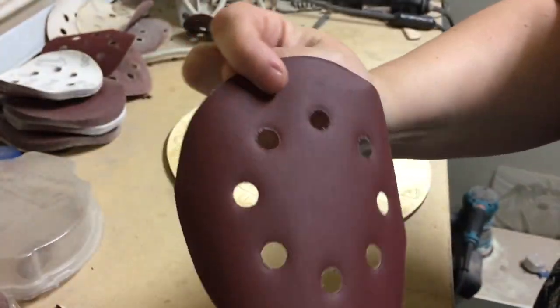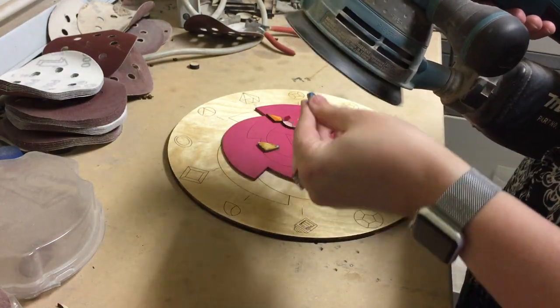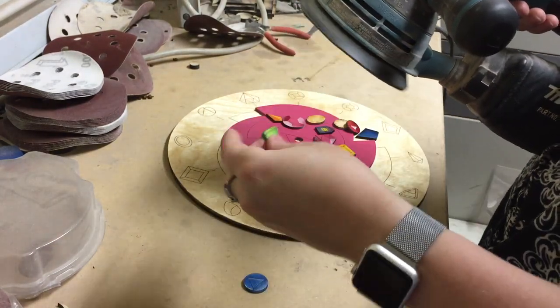So back to the radial hand sander. This time I'm going to be using a rather high grit sandpaper to get the smoothest finish I can. I'm using 600 grit.